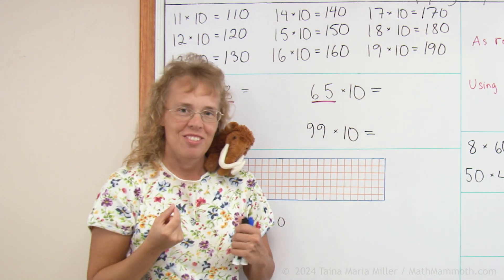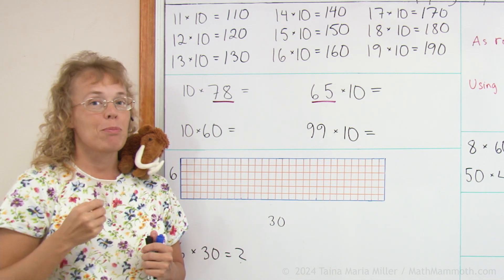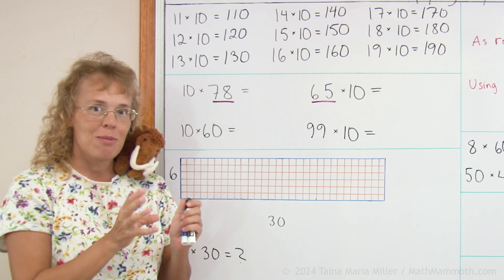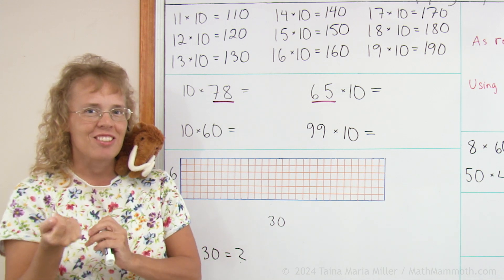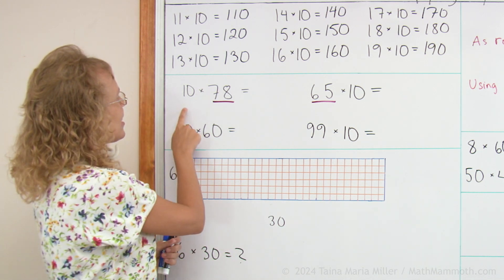There is, in fact, a shortcut for multiplying any number by 10. You take the number and then you tag a zero after it. Like this.